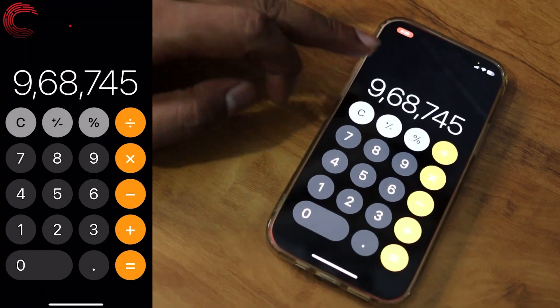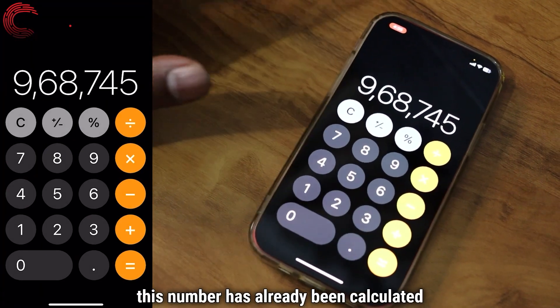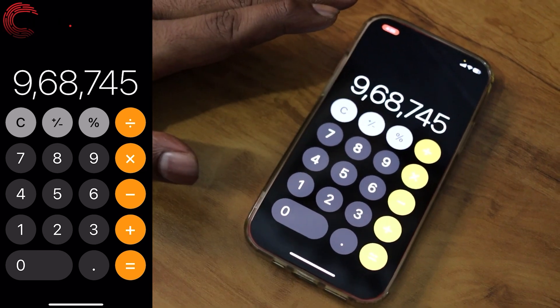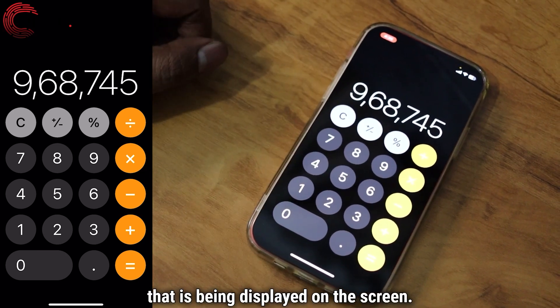For example, this number has already been calculated and this is the final result of the previous calculation that is being displayed on the screen.